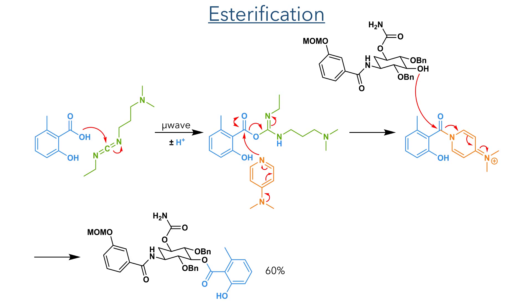In the next step, they functionalised the remaining hydroxyl group. 6-methyl salicylic acid was reacted with EDC and DMAP using microwave heating. This was required as the hydroxyl group is quite sterically hindered and unreactive. EDC is first attacked by the salicylic acid and the resulting activated ester is then attacked by DMAP. This cationic intermediate is then attacked by the hydroxyl group, which eliminates the DMAP to form the desired ester in a 60% yield.